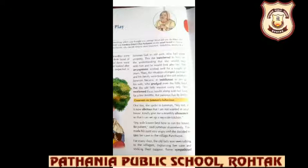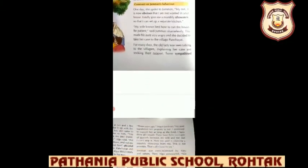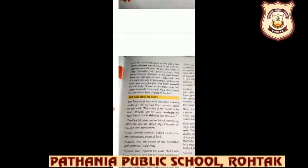After the lady has complained, she starts talking to other villagers and sharing her problem. Some people find her problem genuine and feel bad for her, but some make fun of her, while a few others advise her to make it up with her nephew and his wife. At last, she came to Algu Chaudhuri and spoke to him. Algu said, 'You know, Chachi, Juman is my best friend — how can I go against him?' She replied, 'Is it right, my son, to keep mum?' Her words kept ringing in his ears.